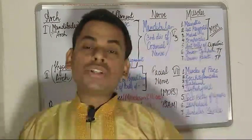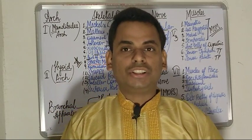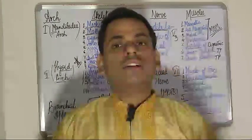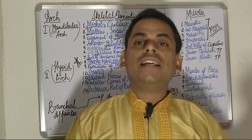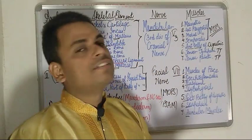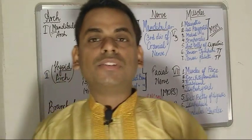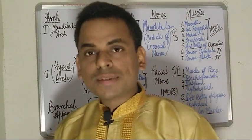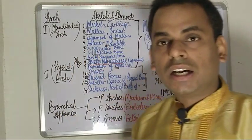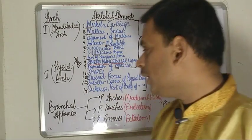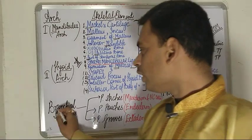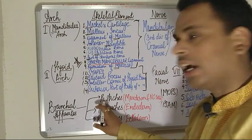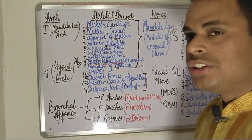Each of the pharyngeal or branchial arches has certain components: the skeletal component, the muscle component, the nerve, and the arterial component. These pharyngeal arches are responsible for the formation of many structures of the head and neck region. They are also called the pharyngeal or branchial apparatus, which comprises three components: the pharyngeal arches, the pharyngeal pouches, and the pharyngeal grooves.